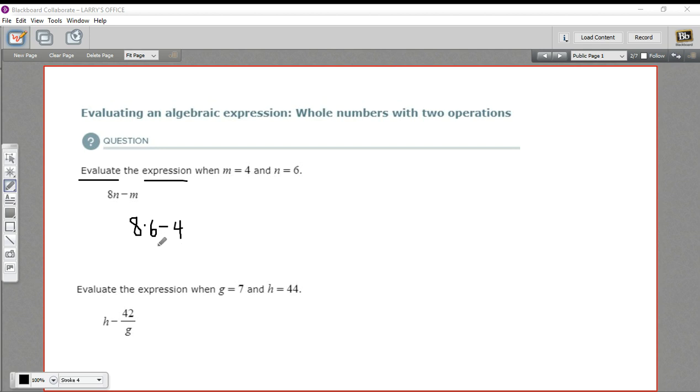We need to go ahead and calculate the rest of this. We should do multiplication before subtraction, based on the order of operations. So 8 times 6, that's 48. So this is 48 minus 4, which is 44. So we've evaluated that expression and come out with 44.